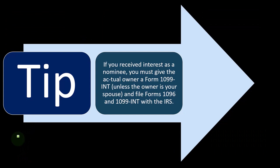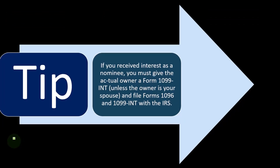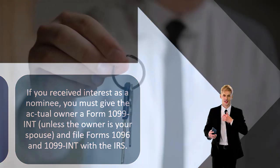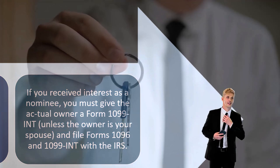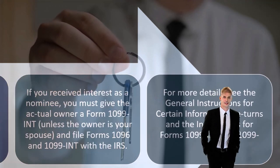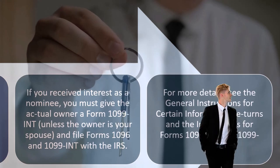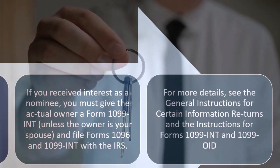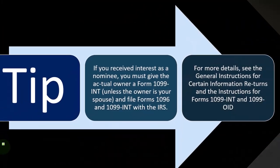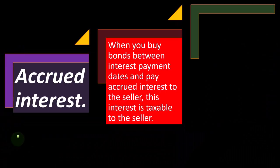If you received interest as a nominee, you must give the actual owner a Form 1099-INT unless the owner is your spouse, and file Forms 1096 and 1099-INT with the IRS. For more details, see the general instructions for certain information returns and the instructions for Form 1099-INT and 1099-OID.